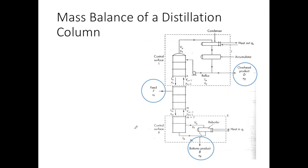In this video I'll be performing a mass balance of a distillation column. On the right you'll see the schematic of a distillation column. It looks complicated but you don't have to worry much about the things going on within this diagram, except for the flows in and the flows out. The flow coming in is the feed F with a mole fraction XF, the overhead product D with mole fraction XD, and the bottom product B with mole fraction XB.